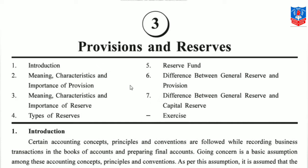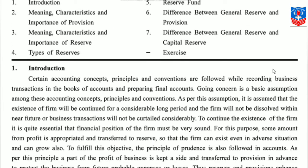This is the chapter in your textbook — Provisions and Reserves. Introduction: Certain accounting concepts, principles and conventions are followed while recording business transactions in the books of accounts and preparing final accounts. Going concern is the basic assumption among these accounting concepts, principles and conventions. As per this assumption, it is assumed that the existence of the firm will be continued for a considerably long period and the firm will not be dissolved in the near future, nor will business transactions be curtailed considerably.